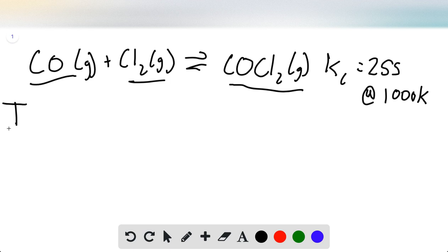To do that we set up an ICE table: initial, change, equilibrium. Our initial CO is 0.1500 molar, our initial Cl2 is 0.175 molar, and our COCl2 is zero.